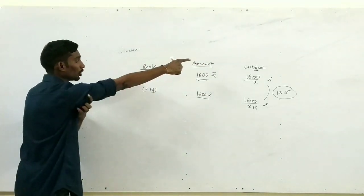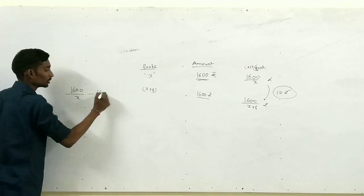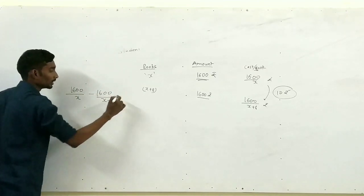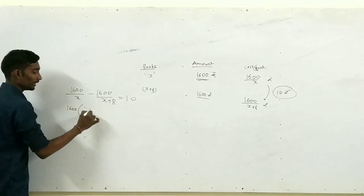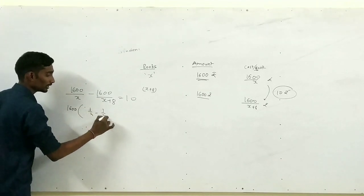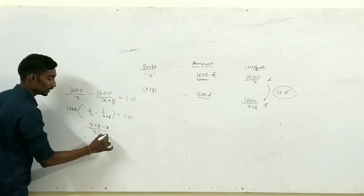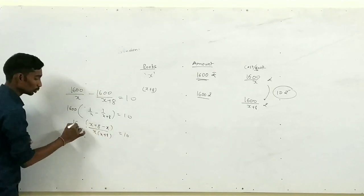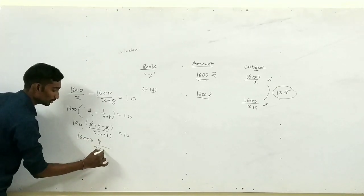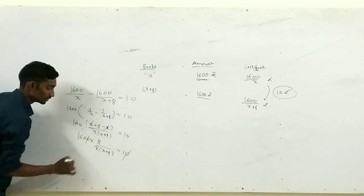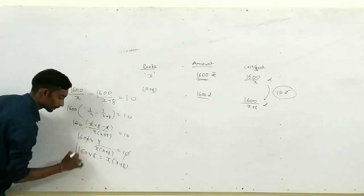Given condition: cost per book का difference — 1600/x minus 1600/(x+8) = 10। 1600 common लेने पर: 1600 × [1/x − 1/(x+8)] = 10। Cross multiply करो: 1600 × 8 / [x(x+8)] = 10। तो 160 × 8 = x(x+8), यानी 1280 = x(x+8)।